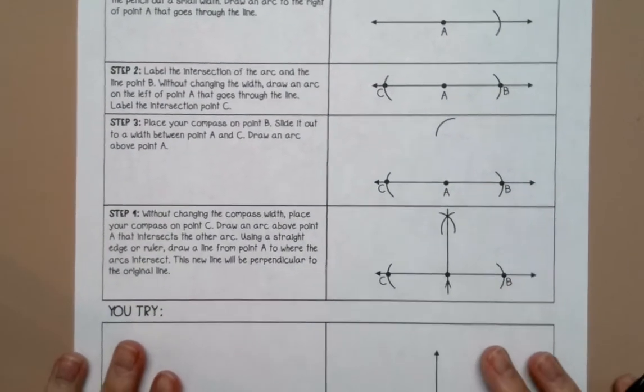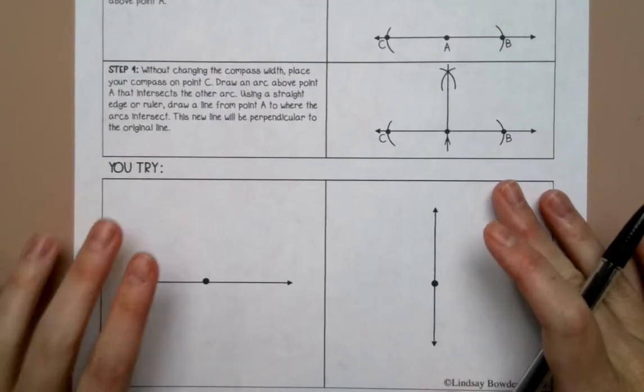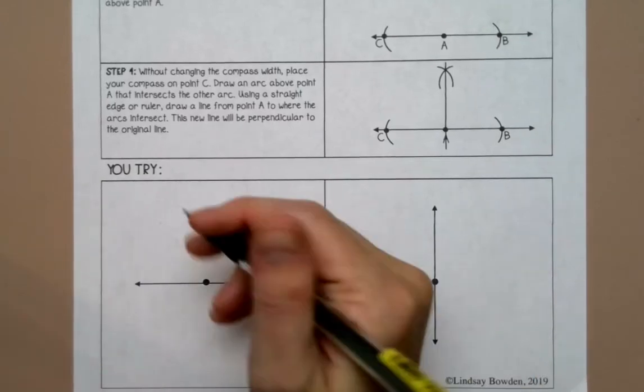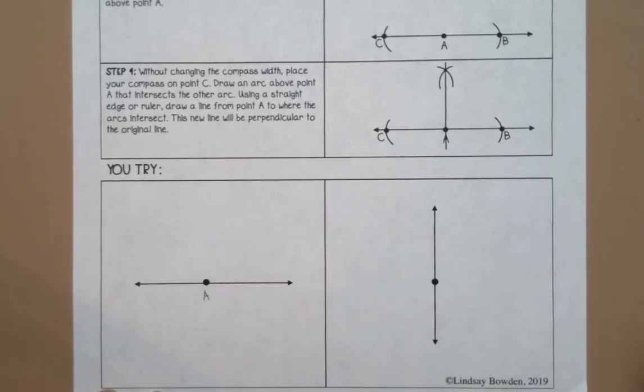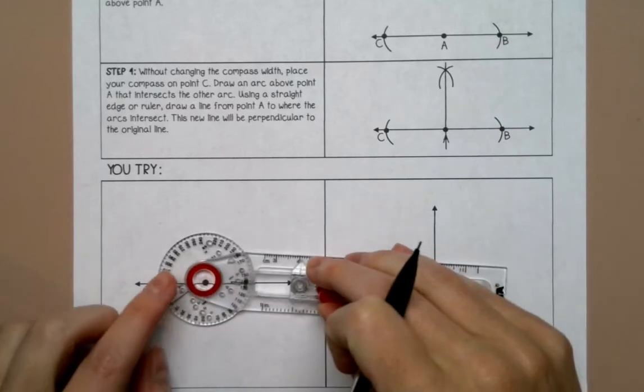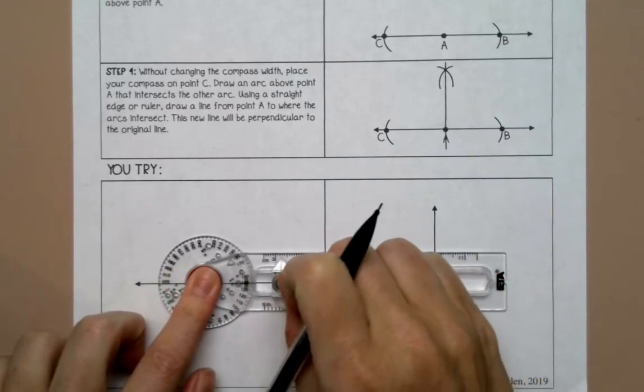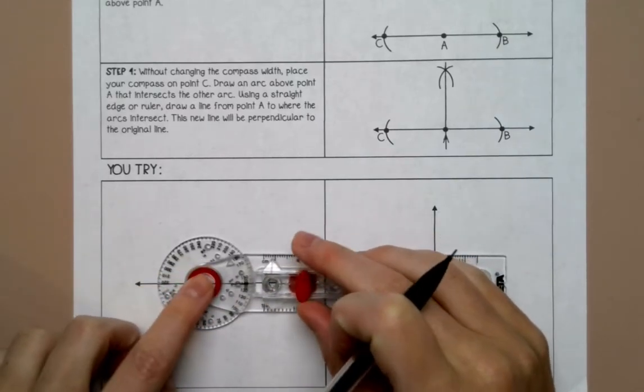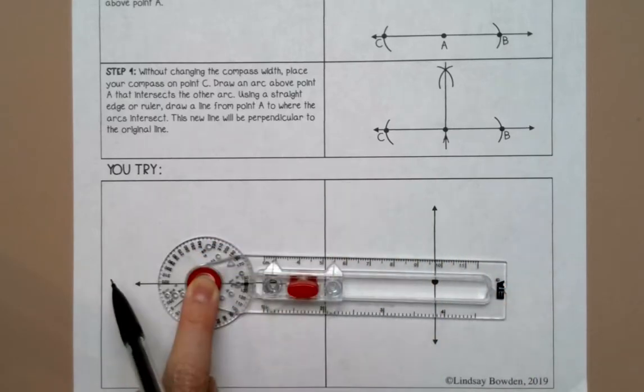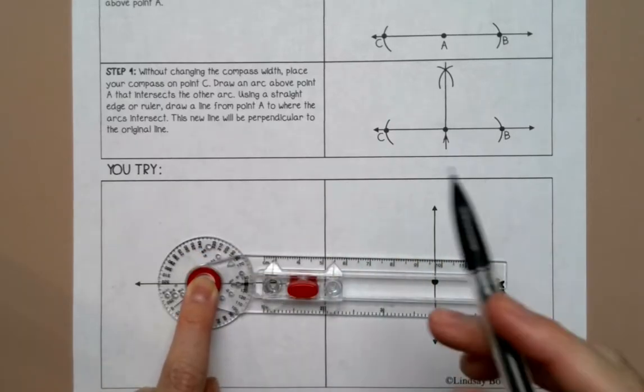Alright, so let's try an actual example. So I'm going to label this point A. Okay, so I'm going to put my compass on point A and I'm going to slide out my compass so that it will go through both sides of the line. And if you need to extend the line, that's totally okay.